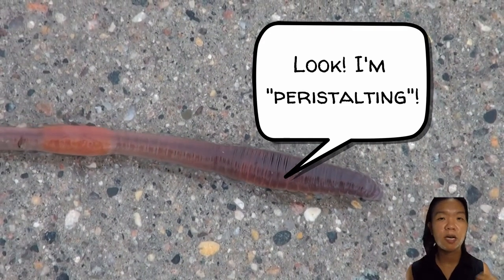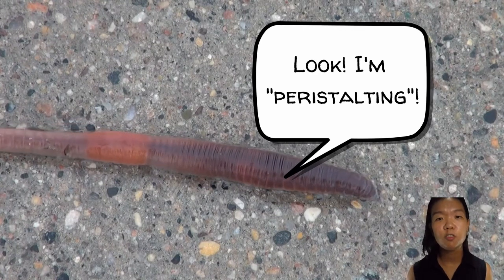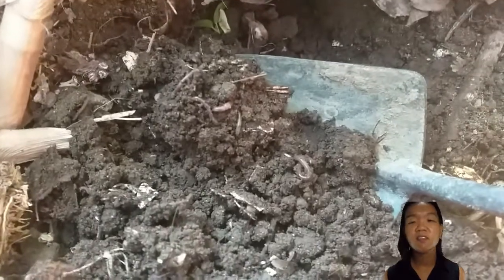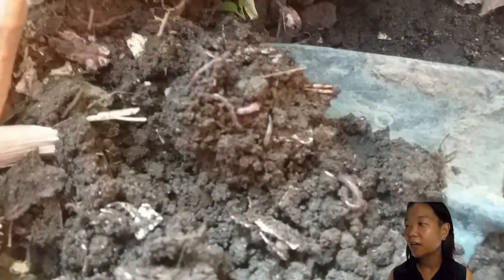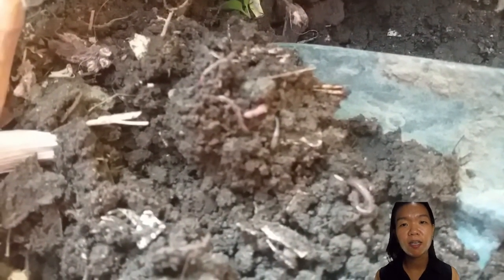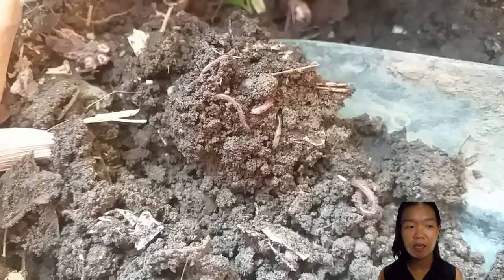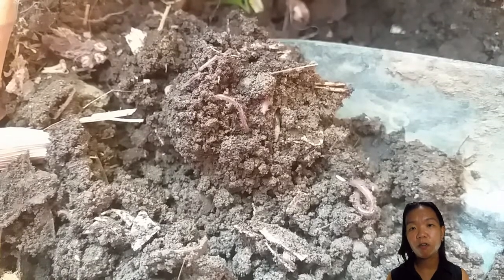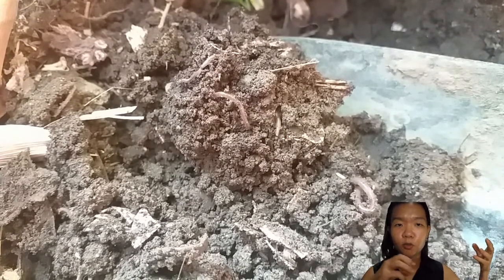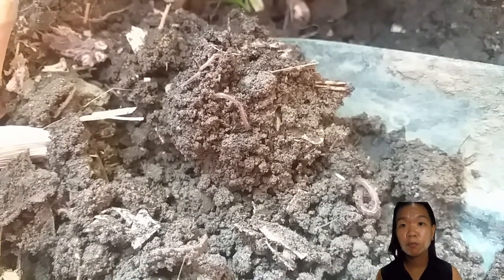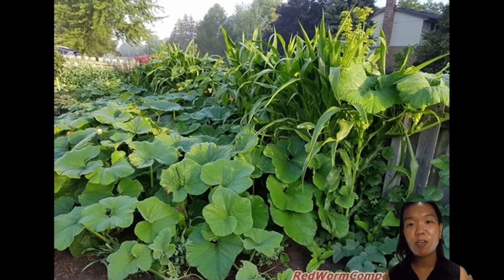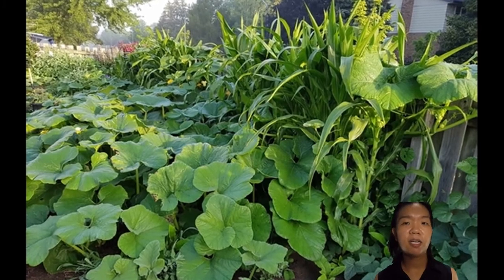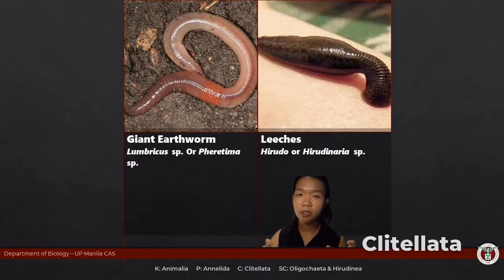Our representative for Oligochaeta is the earthworm — the most commonly used in vermiculture. They eat vegetable and food scraps and turn them into soil. What we call soil is largely invertebrate excrement — poop that is very nutritious and bioavailable to plants, making it easy for plants to absorb the nutrients. Earthworms are doing important ecological work.